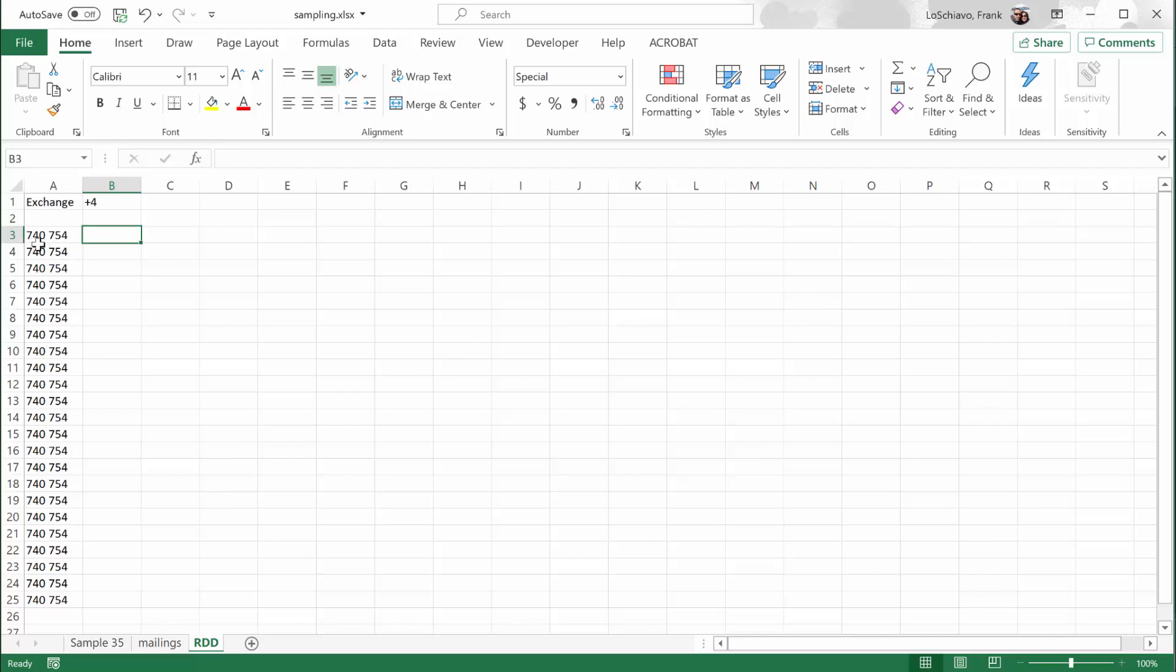And the exchange is 754 for most home-based phone numbers. What we would need is four more digits to round out that phone number and determine exactly who to call. So let's use that RAND BETWEEN command again.